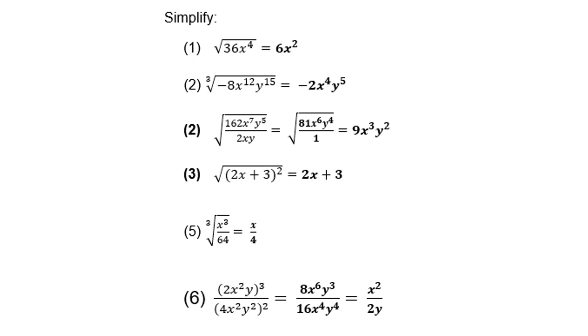The square root of a bracket to the power 2 is simply what's inside the bracket, which is (2x + 3). Then the cube root of x cubed over 64 is x over 4.